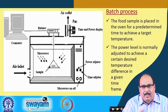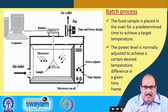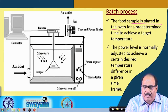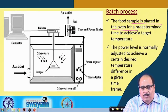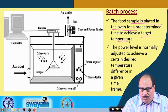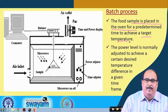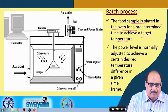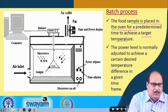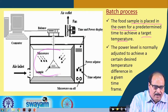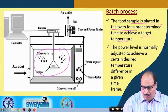Like any other process, microwave processing can be a batch or continuous process. In a batch process, the food sample is placed in the oven for a predetermined time to achieve a target temperature, and the power level is adjusted to achieve the desired temperature difference in a given time frame. This is a conventional microwave oven modified to suit the drying process, with an air inlet, balance system for drying study, and air outlet.